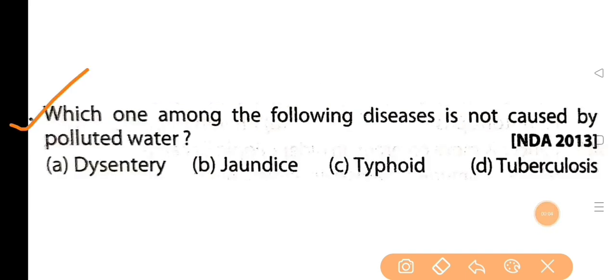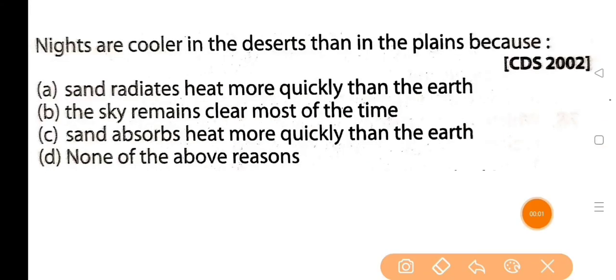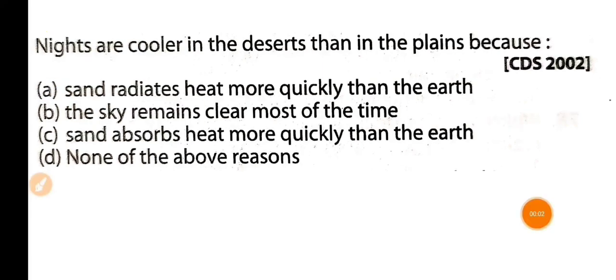Next question: which of the following diseases is not caused by polluted water? The answer is option D: tuberculosis. Next question: nights are cooler in the desert than in the plains because — option A: sand radiates heat more quickly than the earth. Bali ae prithibit koy odhik dhuto tare taap vikiran kore.